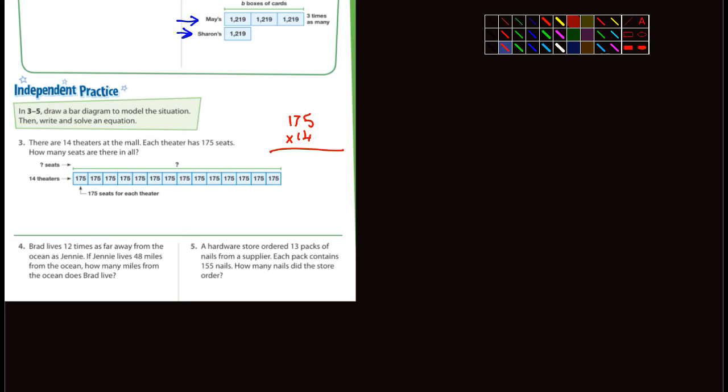Number four, Brad lives 12 times as far away from the ocean as, I think it's Jean or Janine. If Janine lives 48 miles from the ocean, how far from the ocean does Brad live? Well, 48 times 12. Again, you guys can do that.